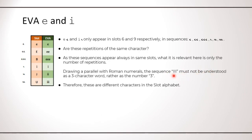And it's a bit like with Roman numbers, like you have a sequence of 3 i, you don't read this as a three-letter word, but as the number 3. And therefore, these are different characters in the slot alphabet as well.